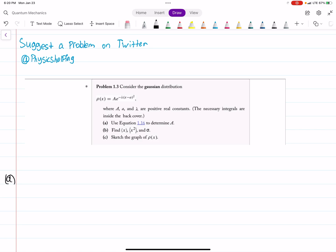1.16 says the integral from negative infinity to positive infinity of, I'm not quite sure if that's rho, but we'll call it rho, equals 1. So plugging that in, we have A, the integral from negative infinity to positive infinity, e to the minus lambda x minus a squared dx equals 1.